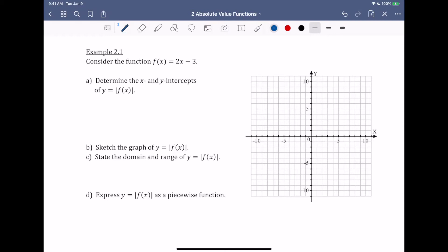Example 2.1. Consider the function f(x) = 2x - 3. Part A, determine the x and y intercepts of y = |f(x)|.